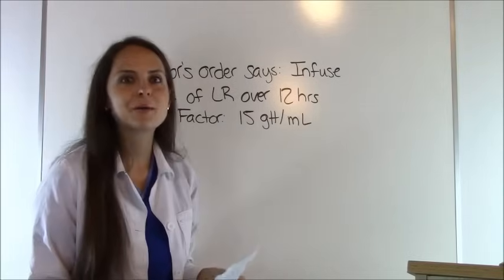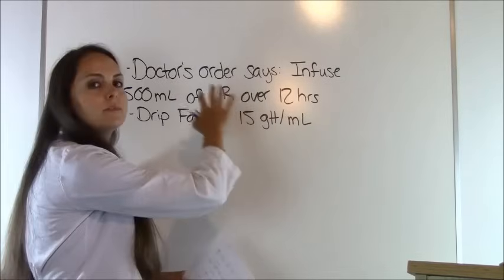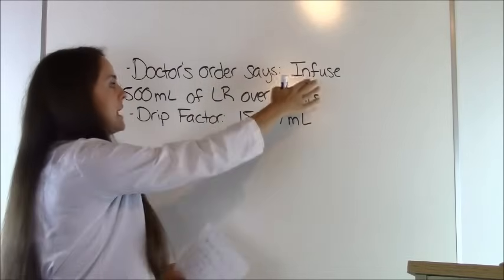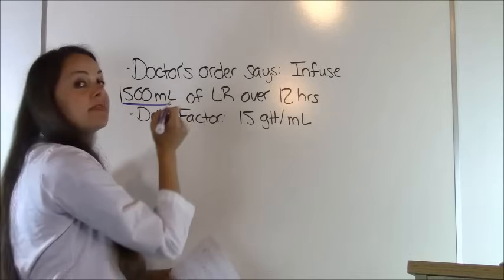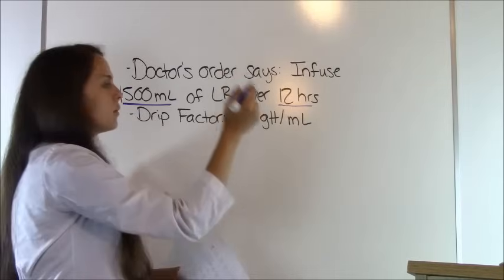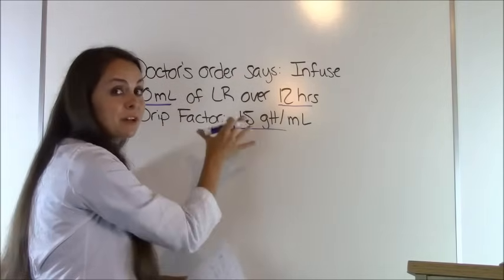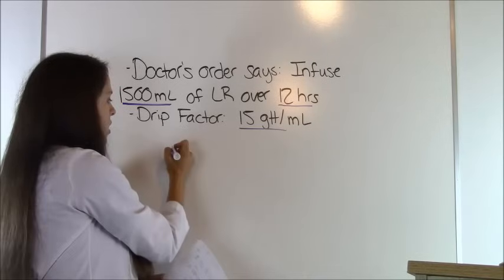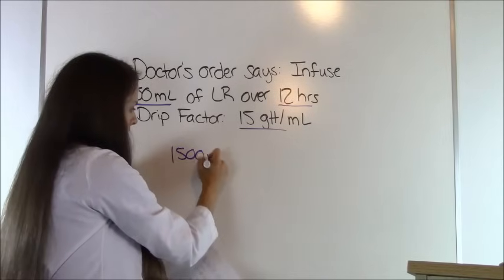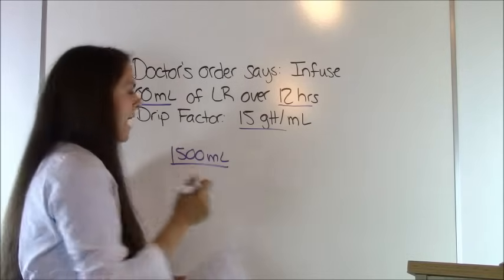Let's set up our problem. I like to first put the doctor's order. What is important in this problem? Infuse 1500 milliliters — that's important — and over 12 hours — that's important — and of course our drip factor is important. We're going to use that information. So we have 1500 milliliters going in over 12 hours.